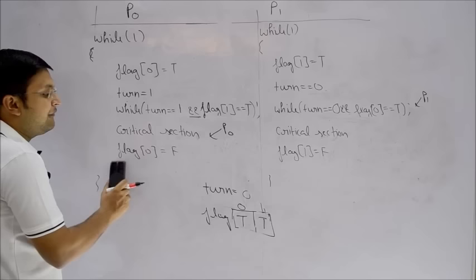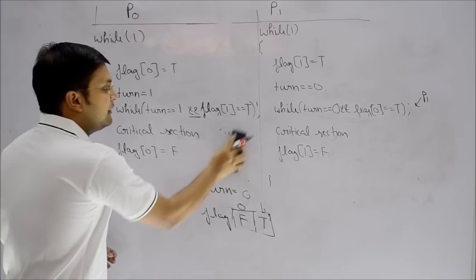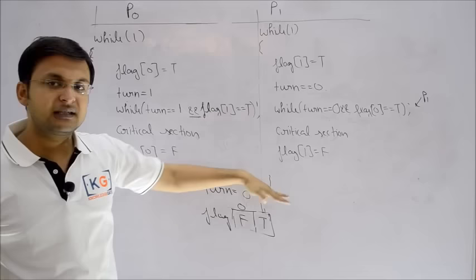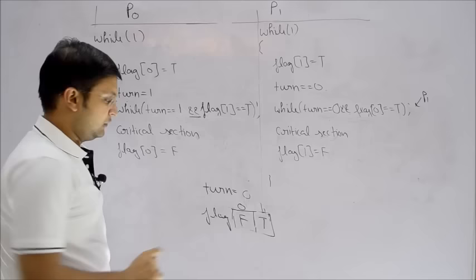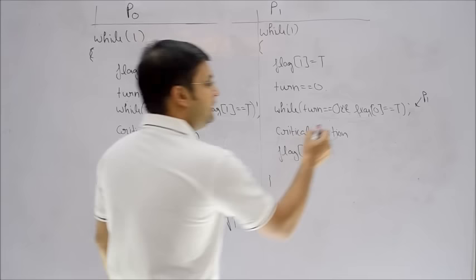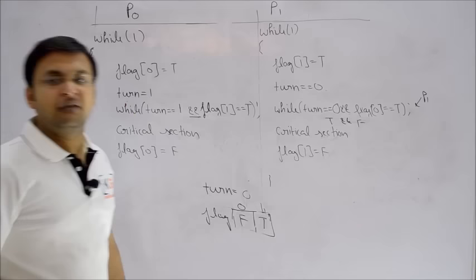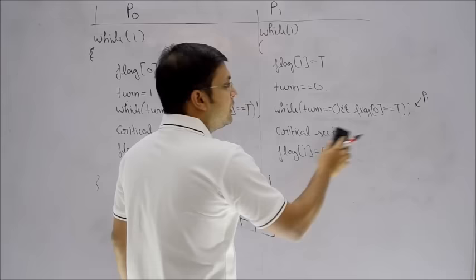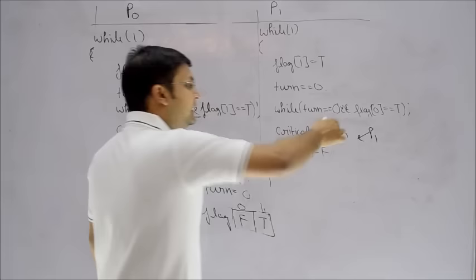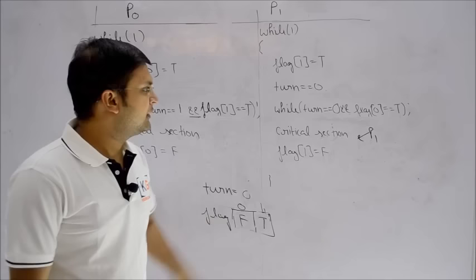When P0 comes out of the critical section, it sets flag[0] back to false. Now if we give control to P1, check the condition again: turn == 0 is true, but flag[0] is now false because P0 is no longer interested. True AND false is false, so P1 exits the while loop and enters the critical section. That's how P1 gets its turn.